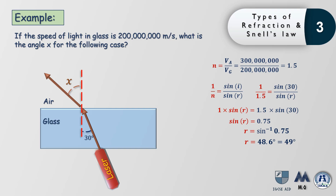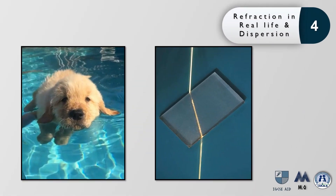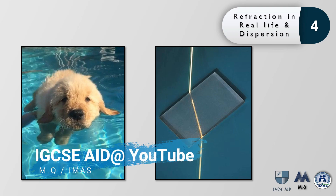Let's look at some real-life examples of refraction. In one picture, a dog's legs appear smaller in size compared to the rest of its body because the legs are in water. As light from the legs travels out towards the camera, it hits the water-air interface at an angle, causing refraction and distorting the image. Another example shows a light ray incident on a glass rectangular prism, which deflects its path.